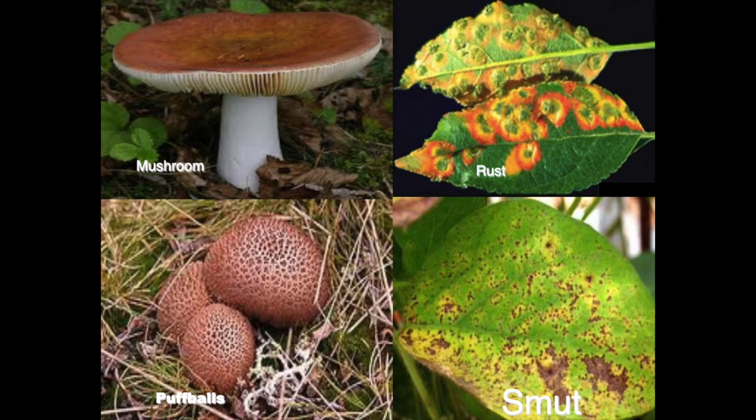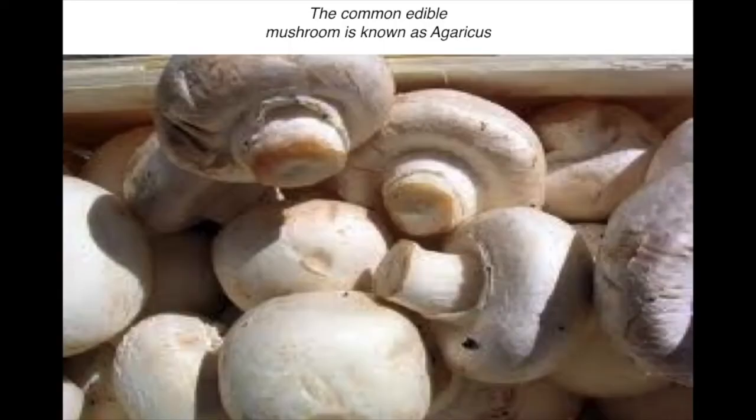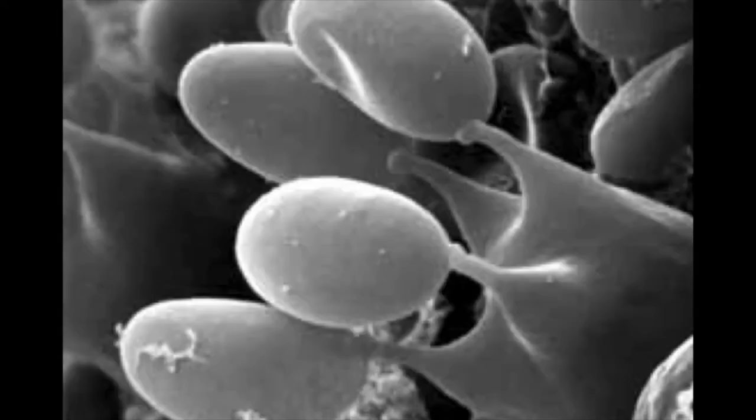The common edible mushroom is called Agaricus — this is your pizza mushroom. Inside that mushroom you have little club structures that hold the spores, and that's why they're called Basidiomycetes — because of these little clubs in the reproductive parts. Fungi are classified by their reproductive structures.